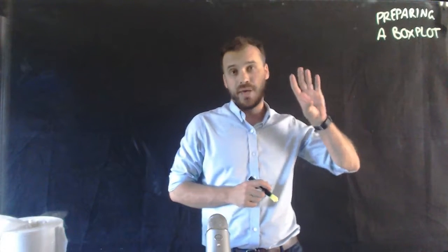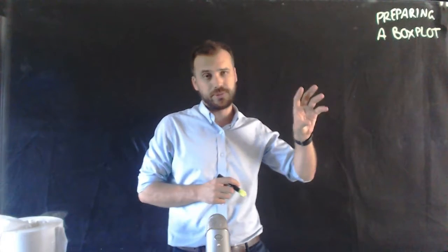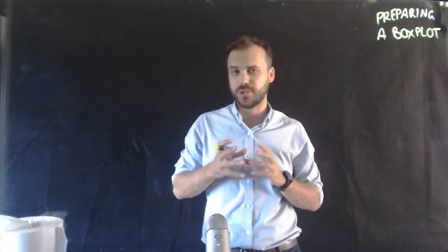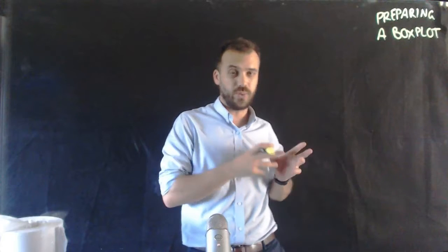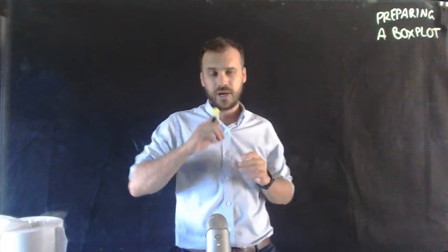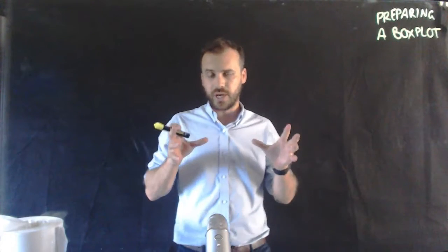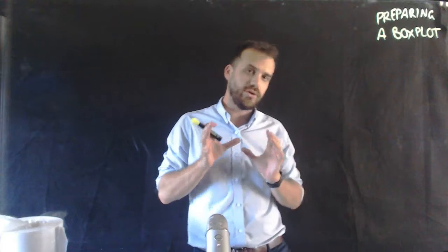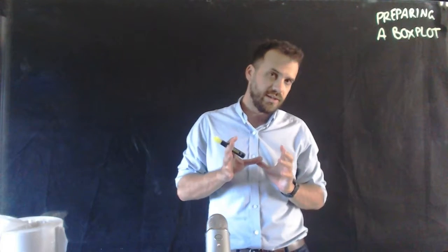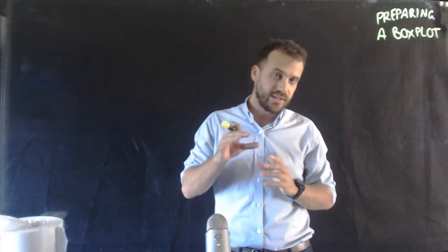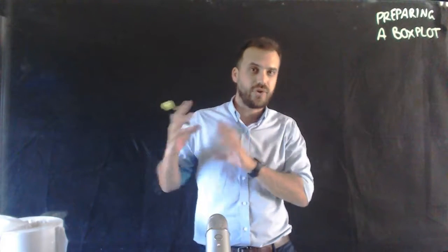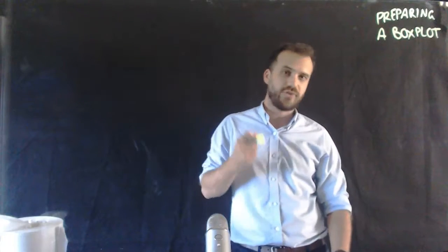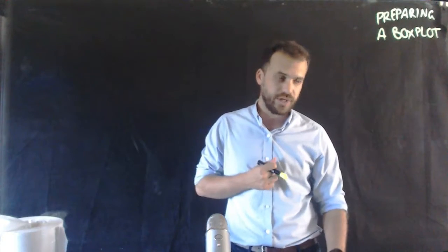In this video we're just going to be preparing a box plot. You might have heard these called a box plot or a box and whisker plot. It's a really nice visual way of looking at the spread of data. To start this we really need a five number summary of a larger data set, so let's look at a five number summary.